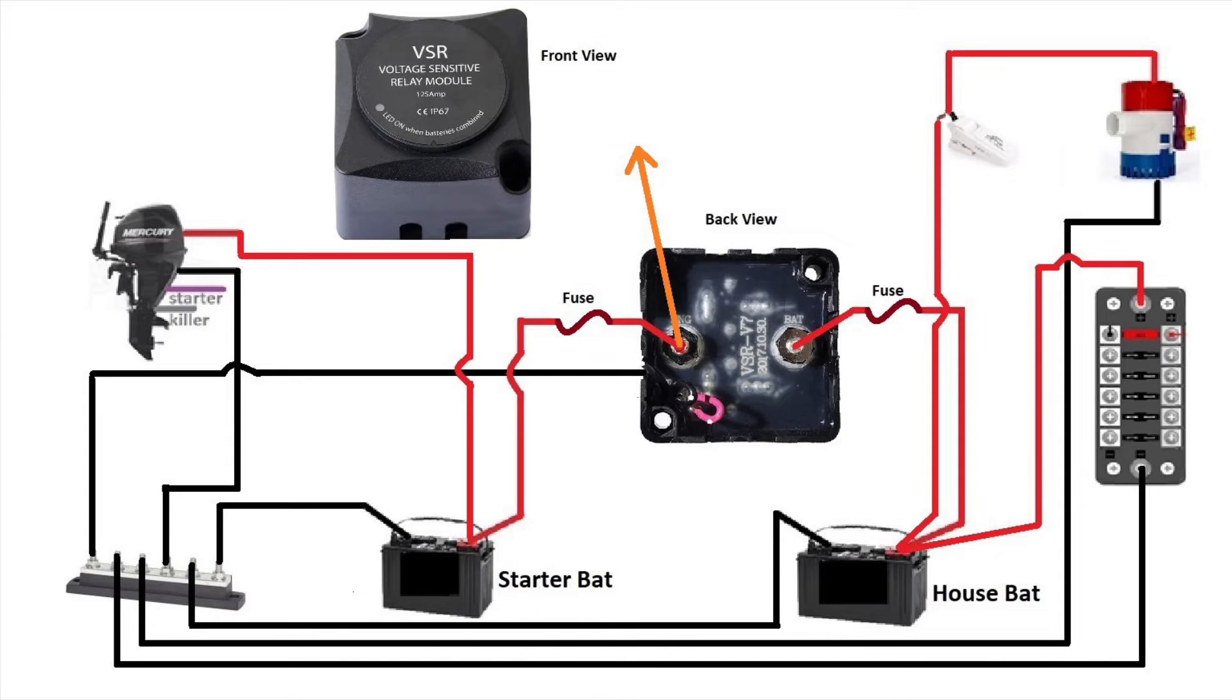Now let's say this is a single VSR. I'm going to explain a bit what goes on with this VSR. As you can see, I added two orange arrows that show an open bridge on top. When the voltage reaches 12.8 volts on the engine side of the VSR, the bridge will close, which will make the voltage pass to the house battery. At this point, both batteries are being charged by the alternator.